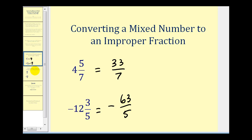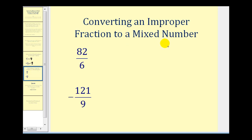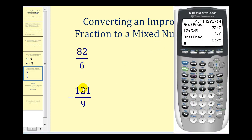Now let's take a look at converting improper fractions to mixed numbers. The main thing to remember here is this fraction bar represents division. So to convert eighty-two-sixths to a mixed number, we can go to the calculator and enter in eighty-two divided by six. Press enter, and again it gives us the decimal value for this.